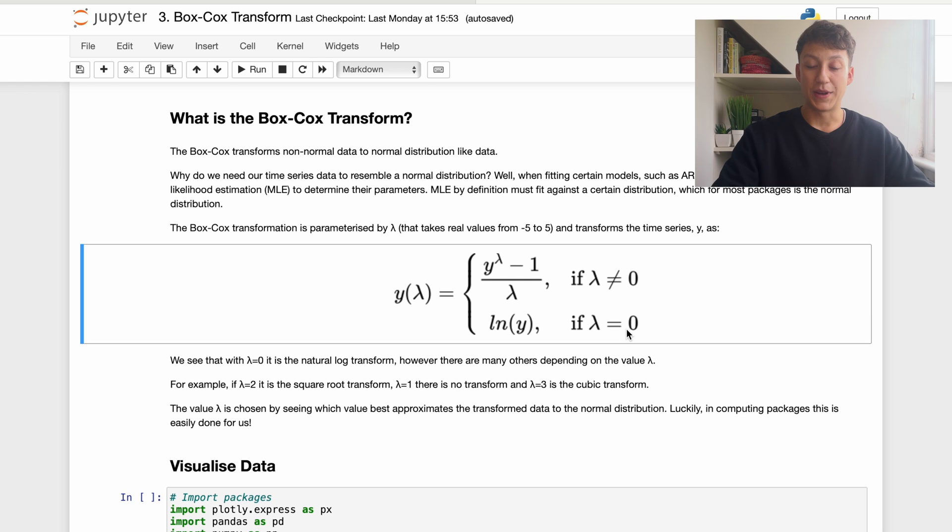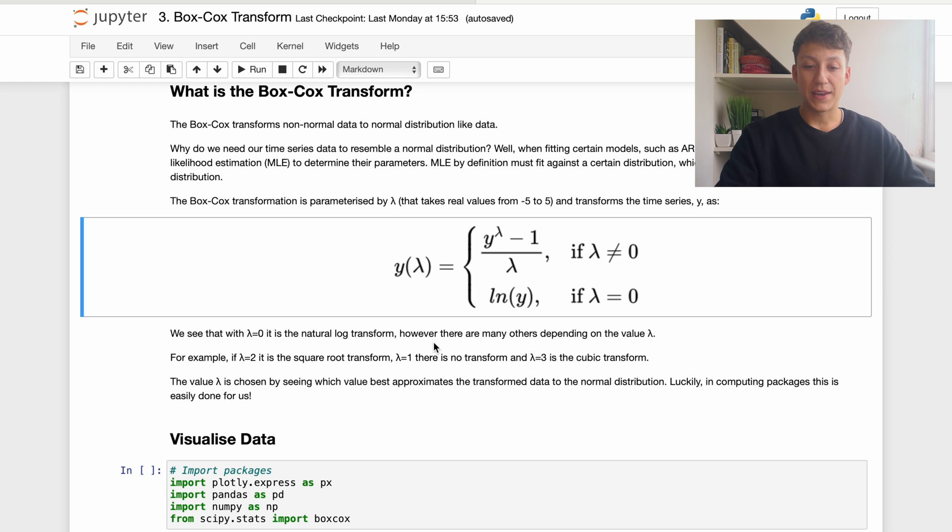Now the Box-Cox transform is basically derived like this. What we have here is it's parametrized by the lambda value that takes value from minus five to five. As an example, y here is time series just to be clear. What we have here is if we have lambda zero, then we have natural log. So when lambda is zero, we're basically saying our series is exponential. However, if lambda equals two, we have y squared; if lambda equals three, you have a cubic transform, and so on. Basically, what we want to do is select—it always seems to be arbitrary—but what we want to do is say the best value of lambda that's going to give us data to be the most normal. This process is actually fairly complicated, but luckily for us in computing packages this is very easily done for us, so we don't worry too much about it.